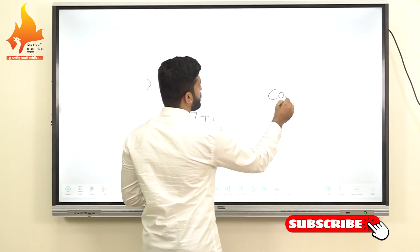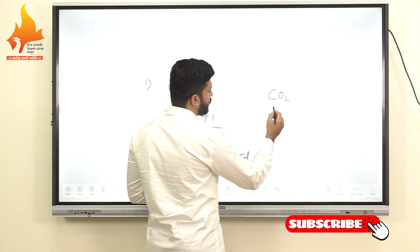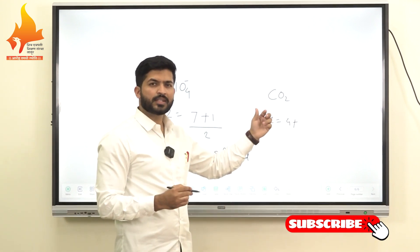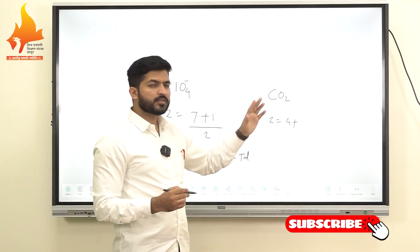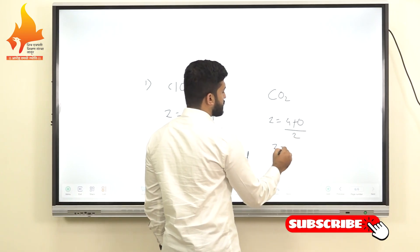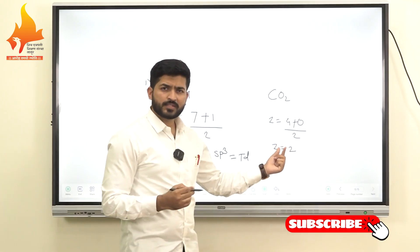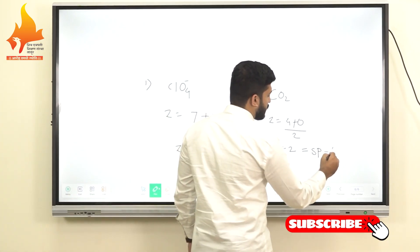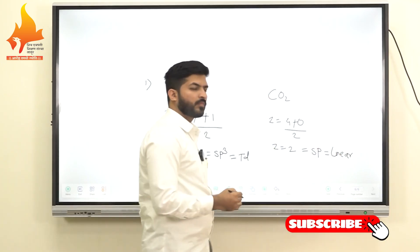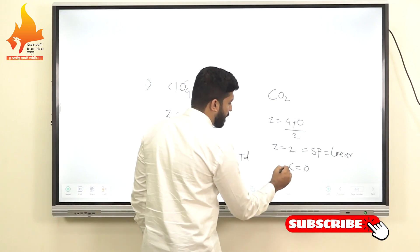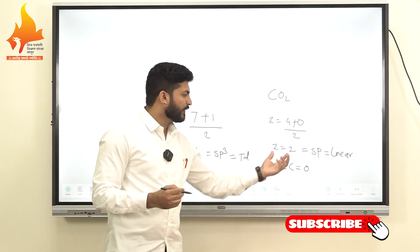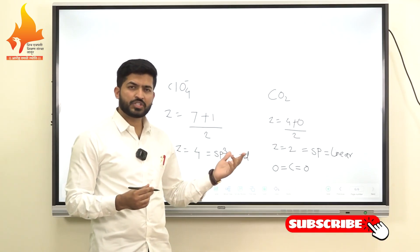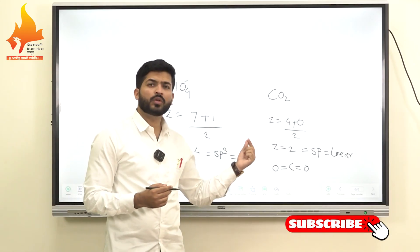For CO2, the central atom is carbon with 4 valence electrons. Oxygen is a divalent atom so we cannot add surrounding atoms, and there is no charge. Z equals 4 plus 0 divided by 2, which equals 2. With 2 electron pairs, hybridization is sp and the geometry or shape is linear. Therefore CO2 has a linear shape — and this is the answer we get from VSEPR theory.